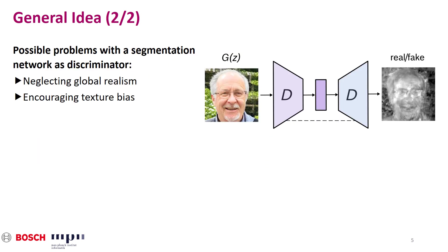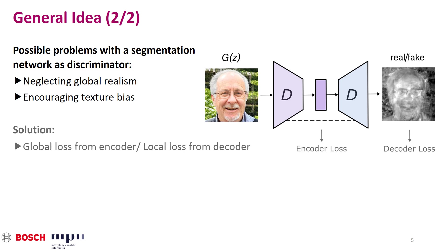Potentially, such a per-pixel discriminator may come with the downside of completely neglecting the global composition of the image. This can be addressed in two ways. First, we calculate the loss for both the encoder and decoder outputs. This way, we have a loss for local and for global realism.